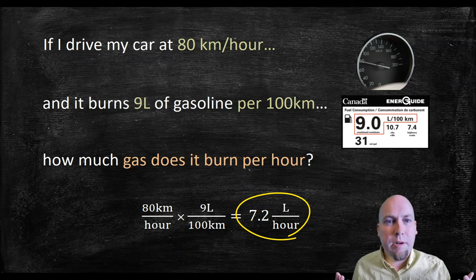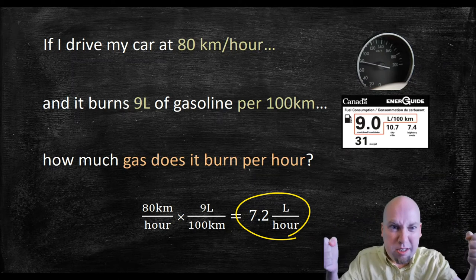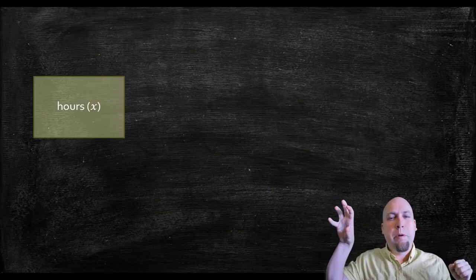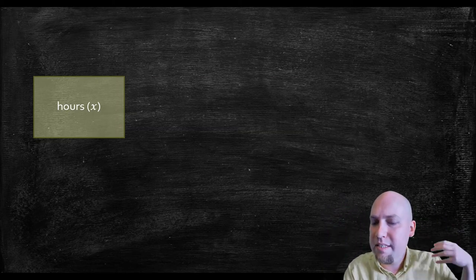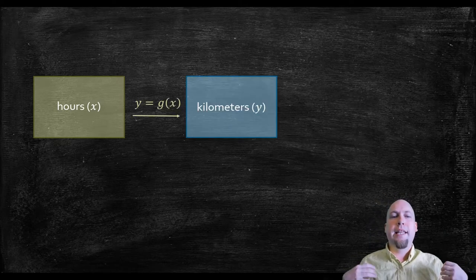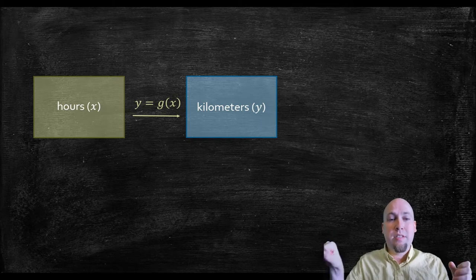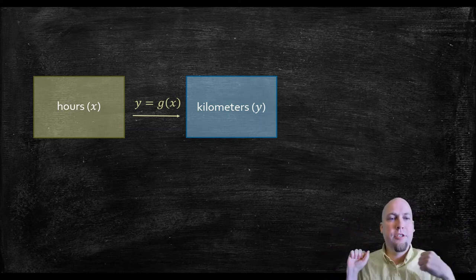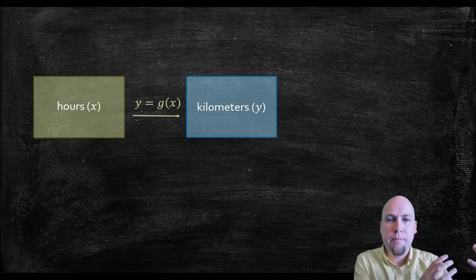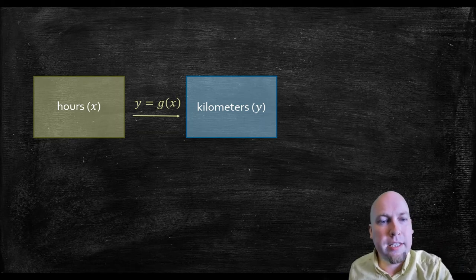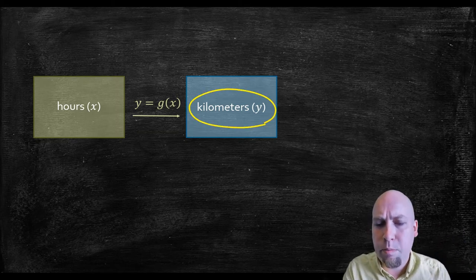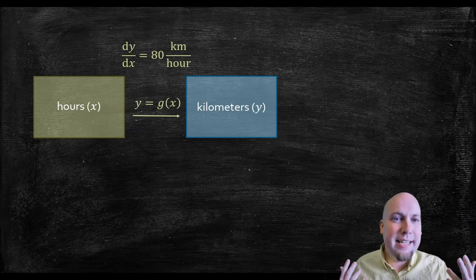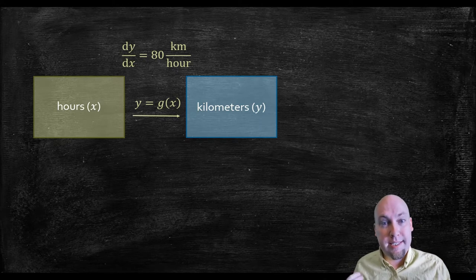We've got two rates of change and we want to find the composite rate of change — you just multiply the individual rates of change together. We started off measuring things in hours: how long have we driven, call that x. Then we had a function g that transformed hours into kilometers — we were traveling at 80 kilometers per hour, so g transforms how long you've been driving into how far you drove. The output is y, the number of kilometers driven, and the derivative dy/dx is 80 kilometers per hour.